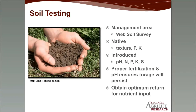Once you've selected your forage, take a soil test first. You can break your property into management areas based on fence lines or the Web Soil Survey. If planting natives, test for texture, phosphorus, and potassium. If planting introduced species, test for pH, nitrogen, phosphorus, potassium, and sulfur. Proper fertilization and pH ensure the forage will persist, and knowing exactly what you have means you can obtain the optimum return for your nutrient input — not putting too much out and wasting money.